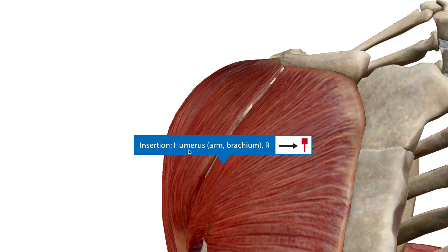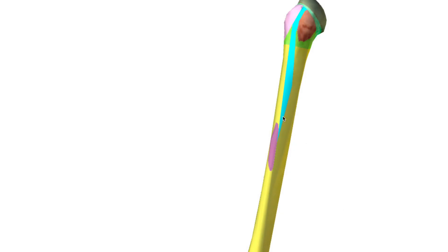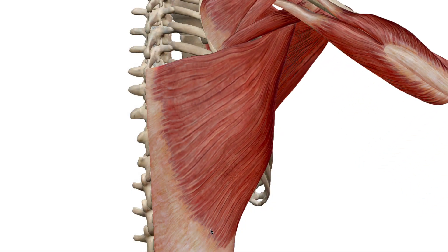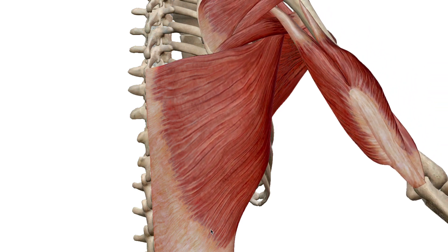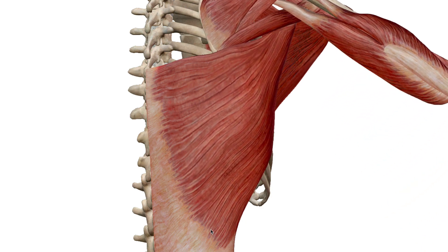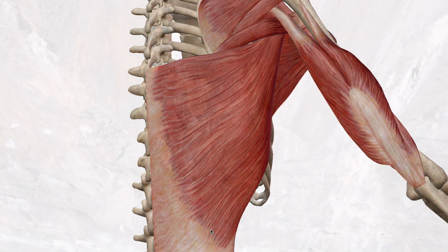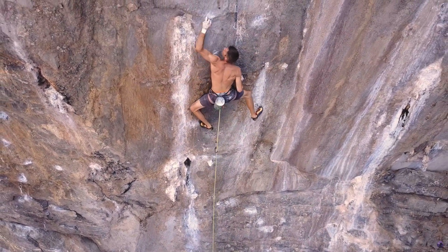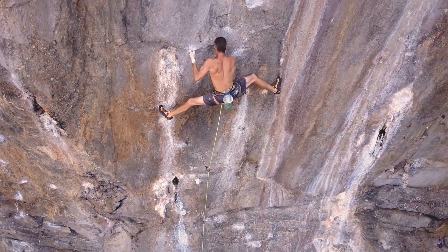Much like the pectoralis major, the latissimus dorsi converges and attaches to the humerus — specifically to the floor of the intertubercular groove. When it contracts, it adducts the arm and pulls it in. This is useful for rowing a boat, walking, bowling, pull-ups, and rock climbing.